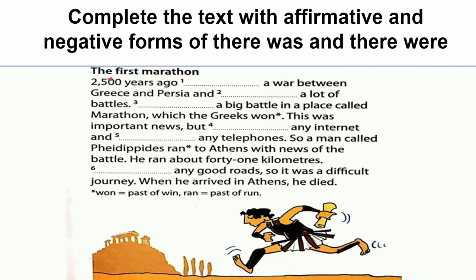Let's review the text together: The First Marathon. 2,500 years ago, there was a war between Greece and Persia and there were a lot of battles. There was a big battle in a place called Marathon, which the Greeks won. This was important news but there wasn't any internet and there weren't any telephones. So a man called Philippus ran to Athens with news of the battle. He ran about 41 kilometers. There weren't any good roads, so it was a difficult journey. When he arrived in Athens, he died.